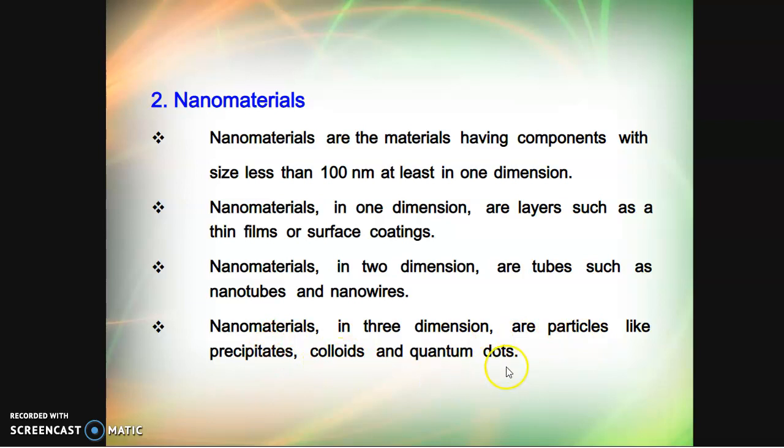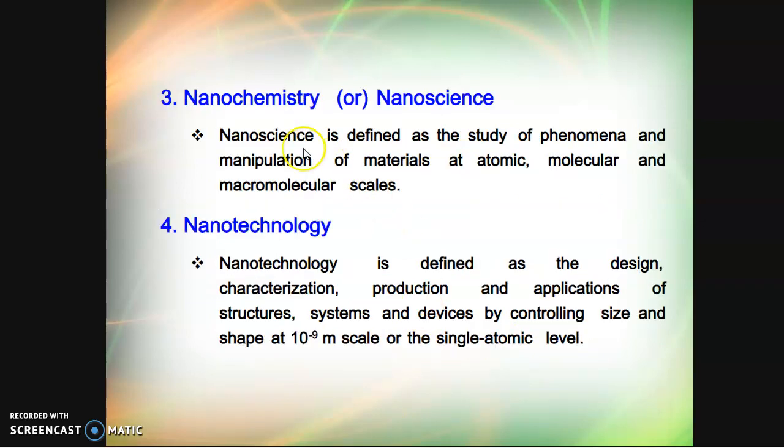Nanoscience is defined as the study of phenomena and manipulation of materials at atomic, molecular, and macromolecular scales. Nanotechnology is defined as the design, characterization, production, and applications of structures, systems, and devices by controlling size and shape. Definitely, it must be in the range of 10^-9 meter scale or the single atomic level.